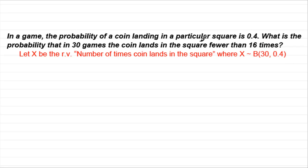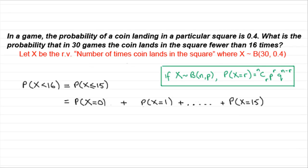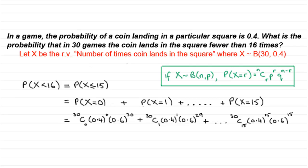If we were to work out the probability that X is less than 16, we'd start to do a sum like this: P(X < 16) = P(X ≤ 15) = P(X=0) + P(X=1) + P(X=2) + P(X=3) + ... all the way up to P(X=15). We would need to use the binomial formula to work out each of these individual probabilities, and that's going to take some time. I've worked this out on a calculator, and it turns out to be 0.9029. You can imagine a question like this is going to take an awful lot of time.